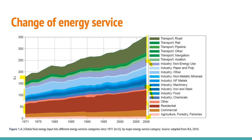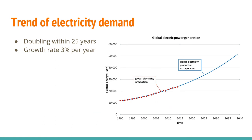Raw material production hasn't grown as badly — industry learned to be more energy efficient. But it is still the biggest part of industrial energy use. There is a small line at the bottom: agriculture, forestry, and fishery together use only a very small amount of energy, though some chemicals going into agriculture are calculated differently.